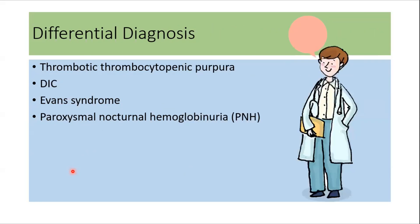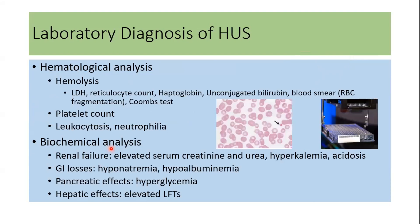The most common differential diagnoses to rule out include thrombotic thrombocytopenic purpura, DIC, Evans syndrome, and paroxysmal nocturnal hemoglobinuria.